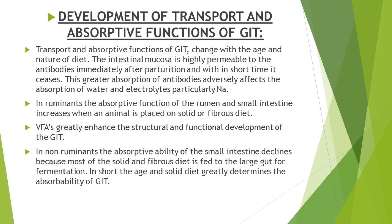In non-ruminants like horse and rabbit, the absorptive ability of the small intestine decreases because most of the solid and fibrous diet is sent to the large gut for fermentation. So in non-ruminants the absorptive ability of the small intestine for volatile fatty acids decreases while the absorptive ability of the large intestine for volatile fatty acids increases. In short, age and solid diet determine the absorbability of the gastrointestinal tract.